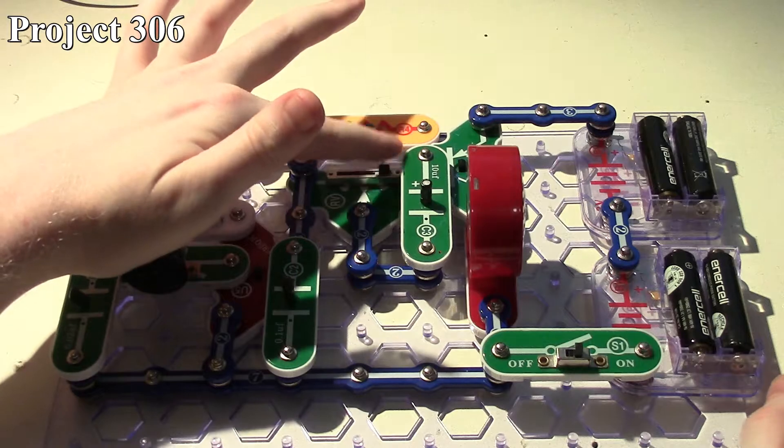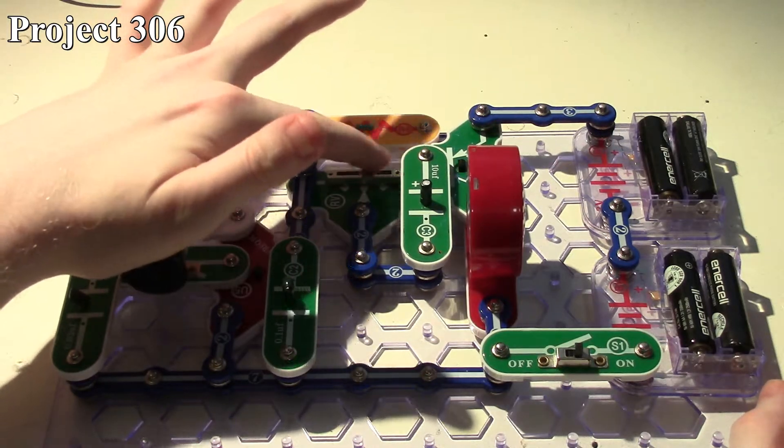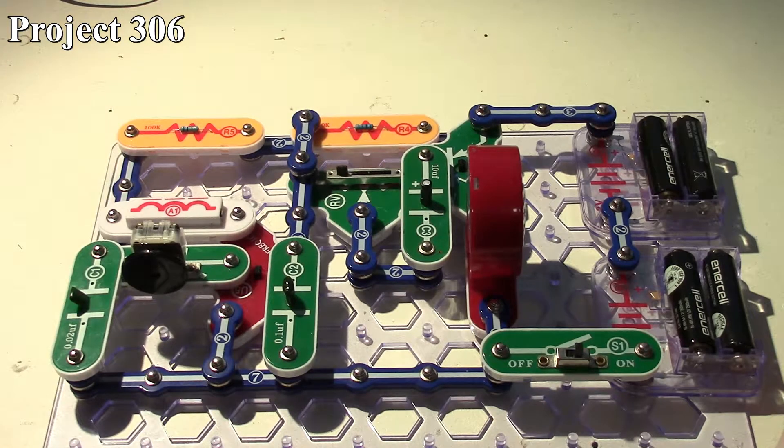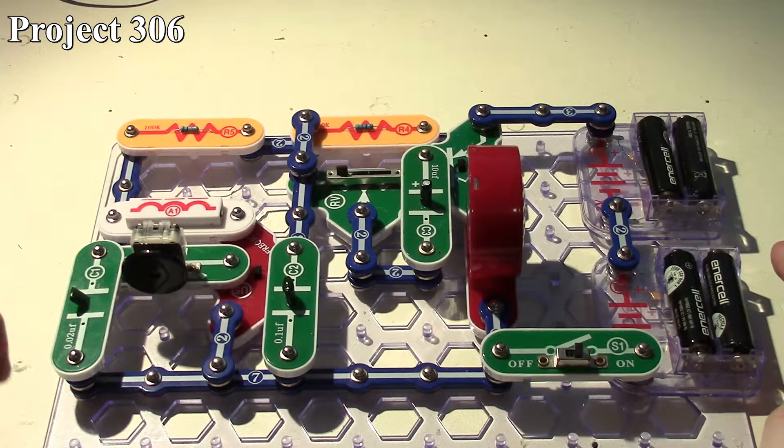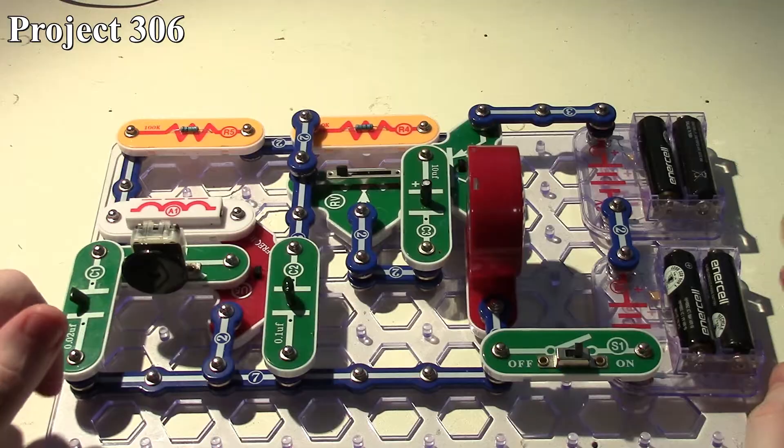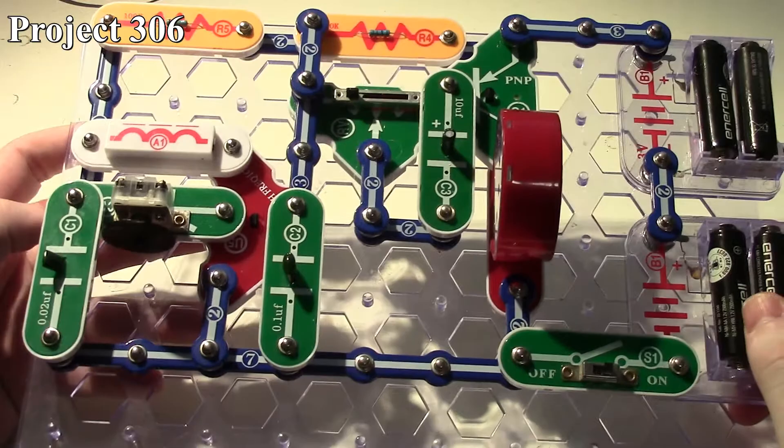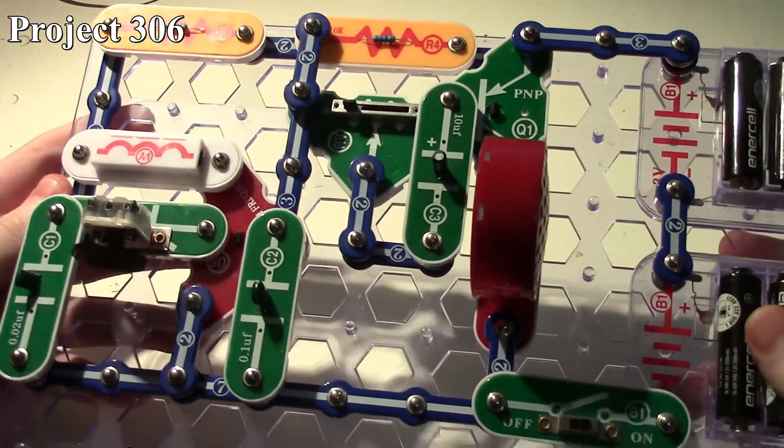I turn it on here and our slider for our variable resistor controls the base of our PNP transistor, controlling how much power goes to our speaker, which in turn gives us volume or amplitude. Without the power amplifier IC, this circuit is actually pretty quiet.